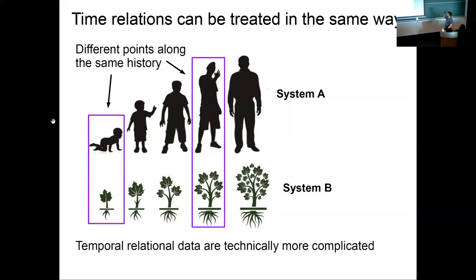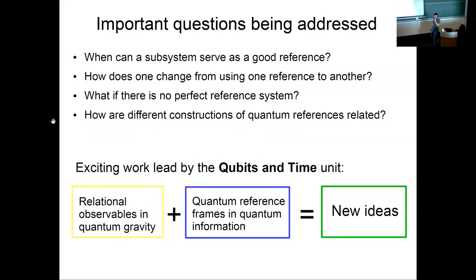Nevertheless, these systems can be set up the same way. Constraints give you some of the same magical results, but there are definitely technical issues. There's lots of interesting problems to solve and want to give kudos to the qubits and time unit for combining the work in relational observables in quantum gravity with the work that's done in quantum information. Because I think that has definitely led to some new and interesting ideas. And then I want to end on a lighter note and see if anyone is still awake.